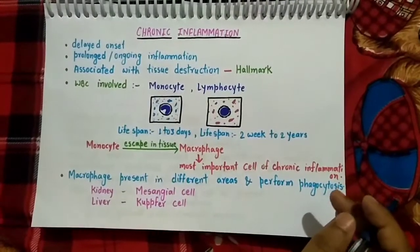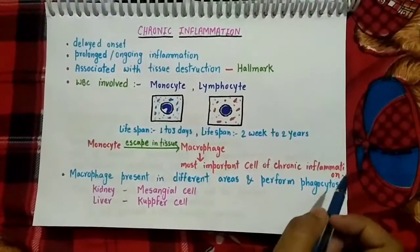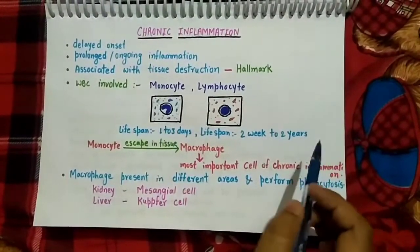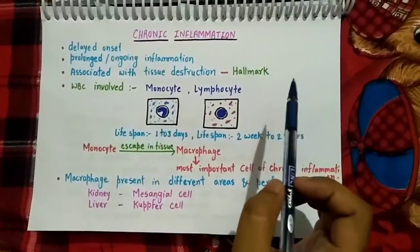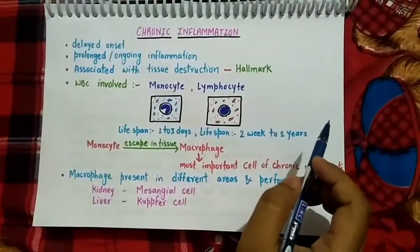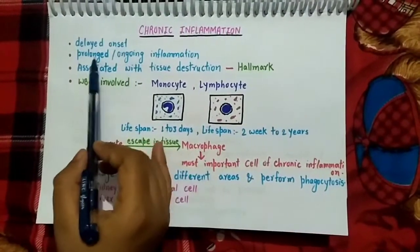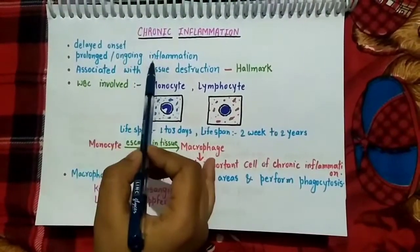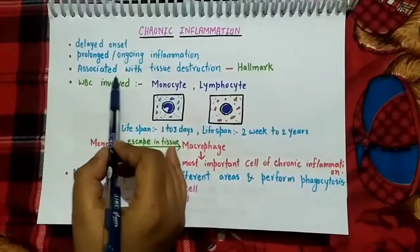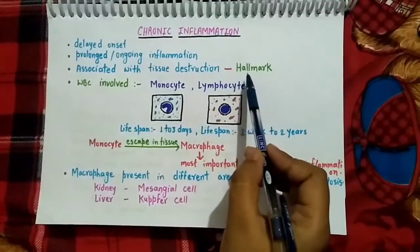Welcome back to Medico Voice. Today's topic is chronic inflammation. When acute inflammation persists for a longer period of time, it is called chronic inflammation. It has a delayed onset and is prolonged and ongoing inflammation.